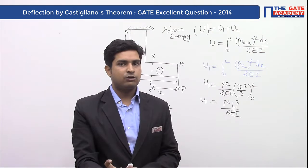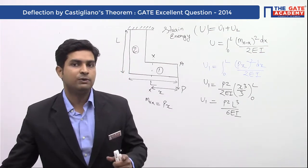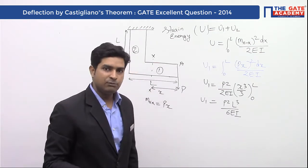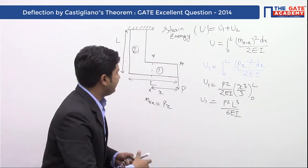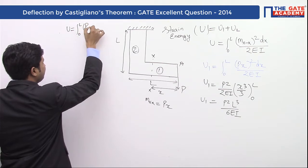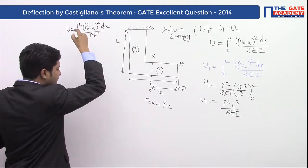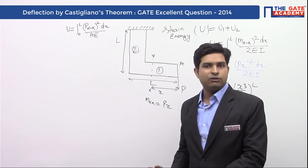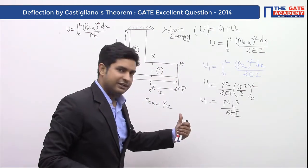The effect of the axial load is neglected as stated in the question. In this second part there is axial load as well as bending moment. The strain energy due to axial load would be given by the integral from 0 to L of Pxx squared dx divided by AE, but since the question states the effect of axial load is neglected, this will not be considered. So we consider only the bending moment for the second part.